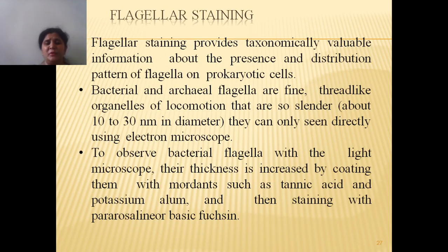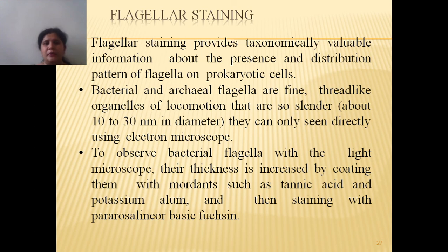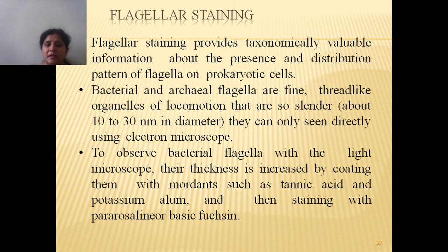The next type of differential staining is flagellar staining. Flagellar staining provides taxonomically valuable information about the presence and distribution pattern of flagella on the prokaryotic cell. Bacterial flagella are fine, thread-like organelles mainly used for locomotion and can be seen directly by electron microscopy. They are about 10 to 30 nanometers in diameter. To observe bacterial flagella with a light microscope, their thickness must be increased by coating them with a mordant like tannic acid and potassium alum, and then staining with pararosaniline basic fuchsin.